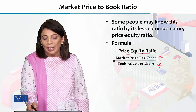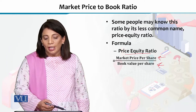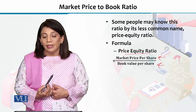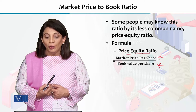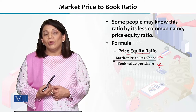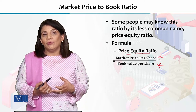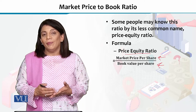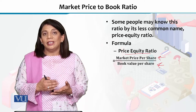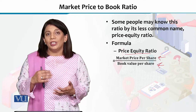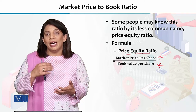If the value of the market price to book ratio is greater than one, it means that the book value is lower as compared to the excess demand in the market for that stock.